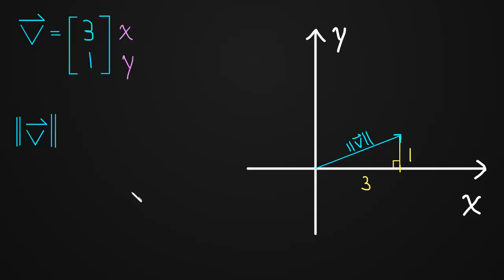And so we can just use the Pythagorean Theorem. The length of v squared is equal to the 3 squared, the base squared, plus the height squared. So 3 squared plus 1 squared. This is a direct application of the Pythagorean Theorem.